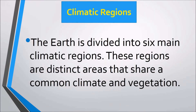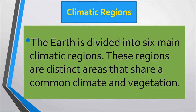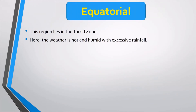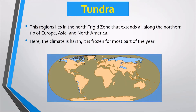Next are climatic regions. The Earth is divided into six main climatic regions — distinct areas that share a common climate and vegetation. The first is Tundra, which lies in the frigid zone extending along the northern tips of Europe, Asia, and North America. Here the climate is harsh and frozen for most of the year. We can see the blue area on the map as the Tundra regions.